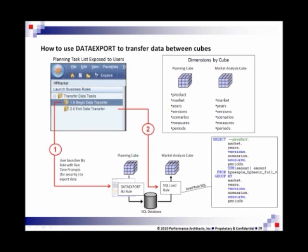So this could actually be integrated into a task list as well. So step one in the task list is begin the data transfer. What that does is that launches a business rule, the runtime prompt, and you're only going to be able to see, you're only going to be able to export or select things that your security profile says that you have access to.